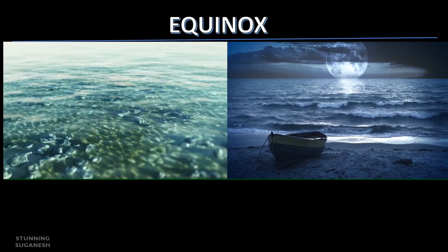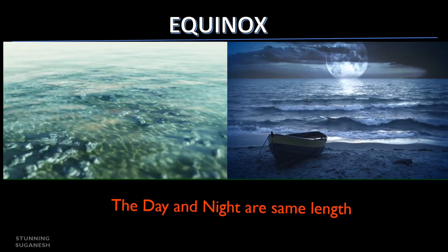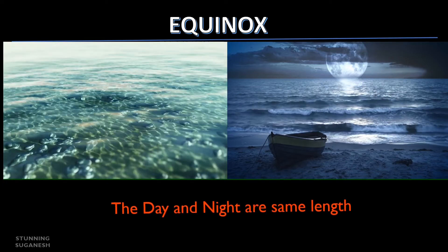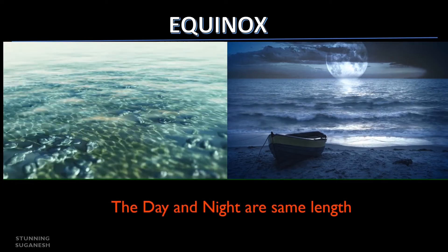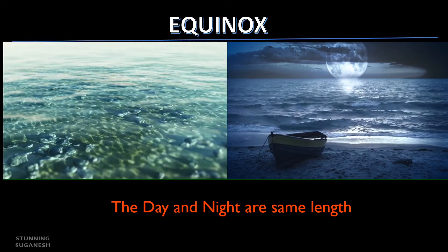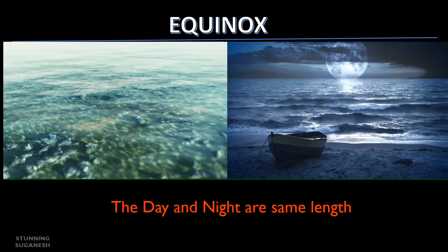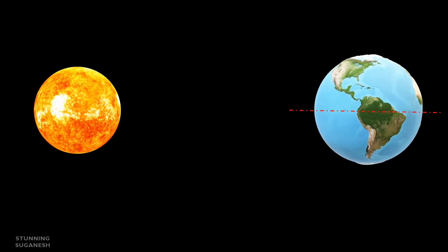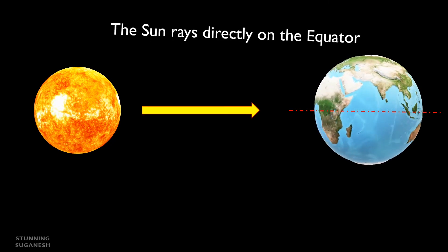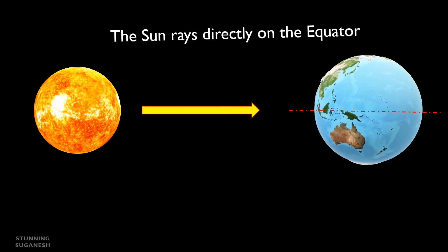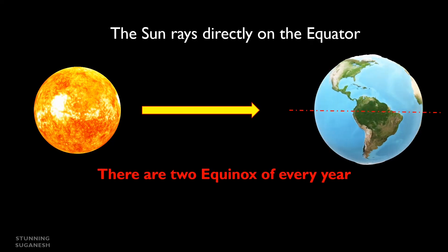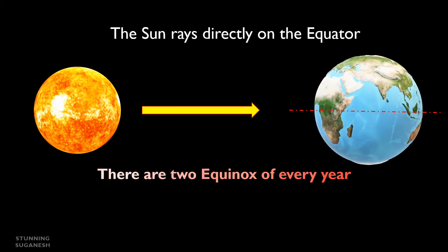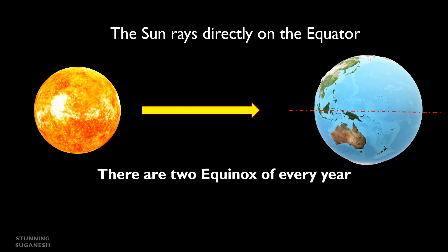Equinox is when the day and night are the same length — 12 hours of day and 12 hours of night. During an equinox, the sun's rays directly fall on the equator. There are two equinoxes every year.